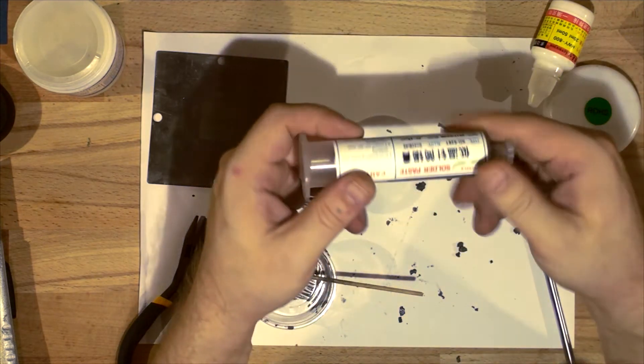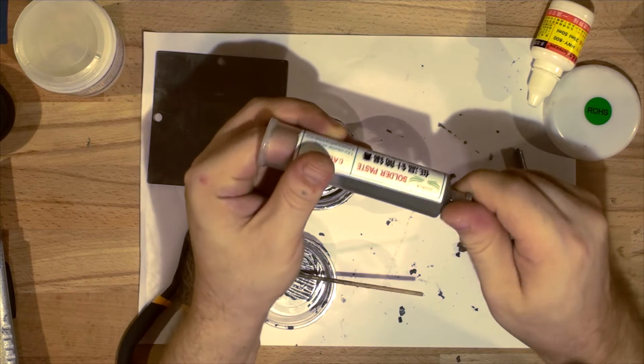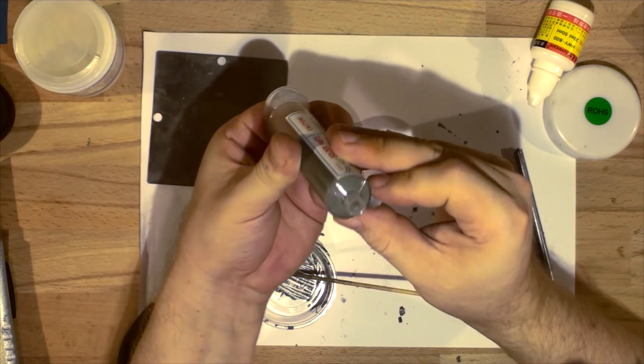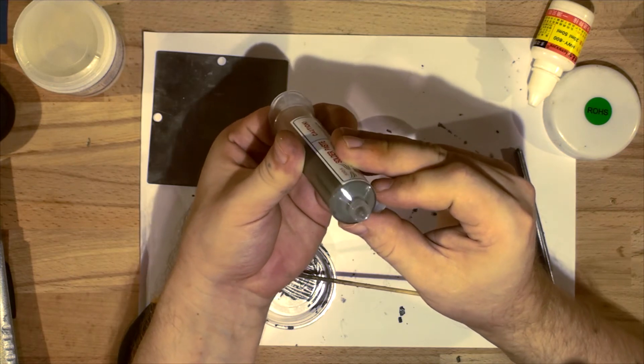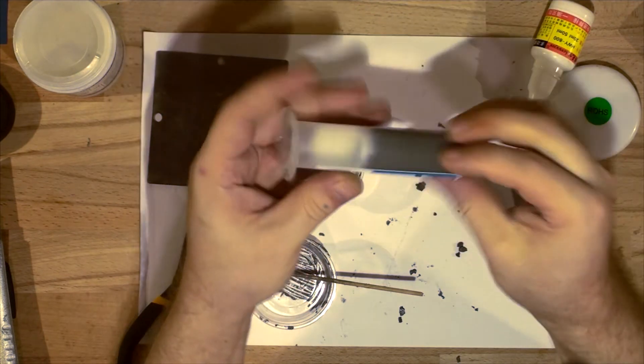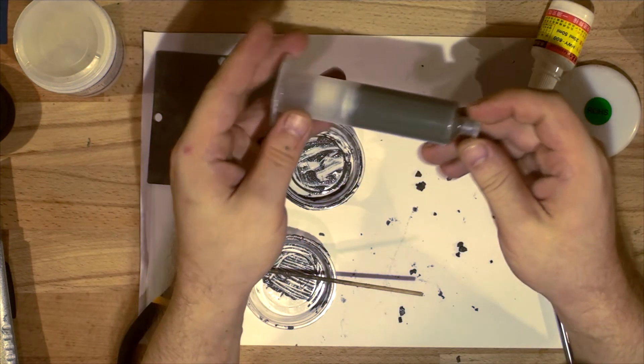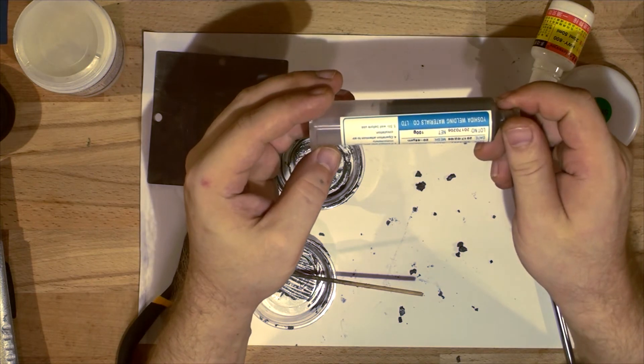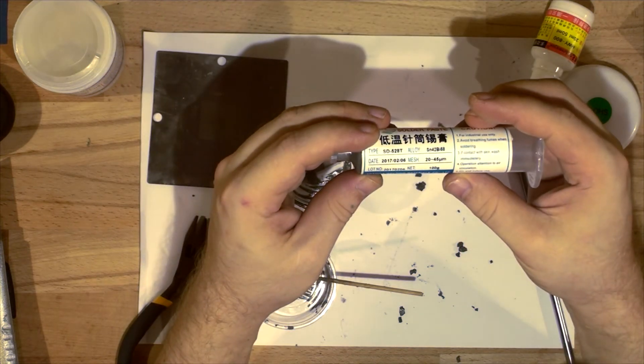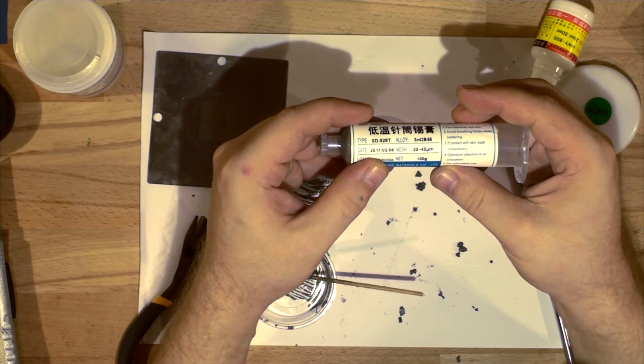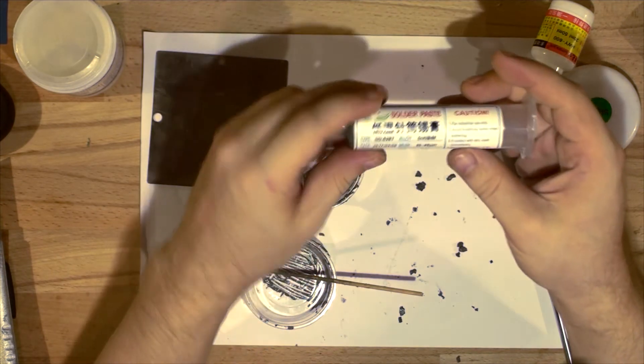There we go. So we've got our solder paste back, and that's going to be really nice and easy. Just a little bit of pressure and you can see it's already coming out. So that's going to go back in the fridge, and that's now refreshed paste from years ago. It's actually from 2017, so it's actually four years old. So that paste is four years old and it's now refurbished and it works great.